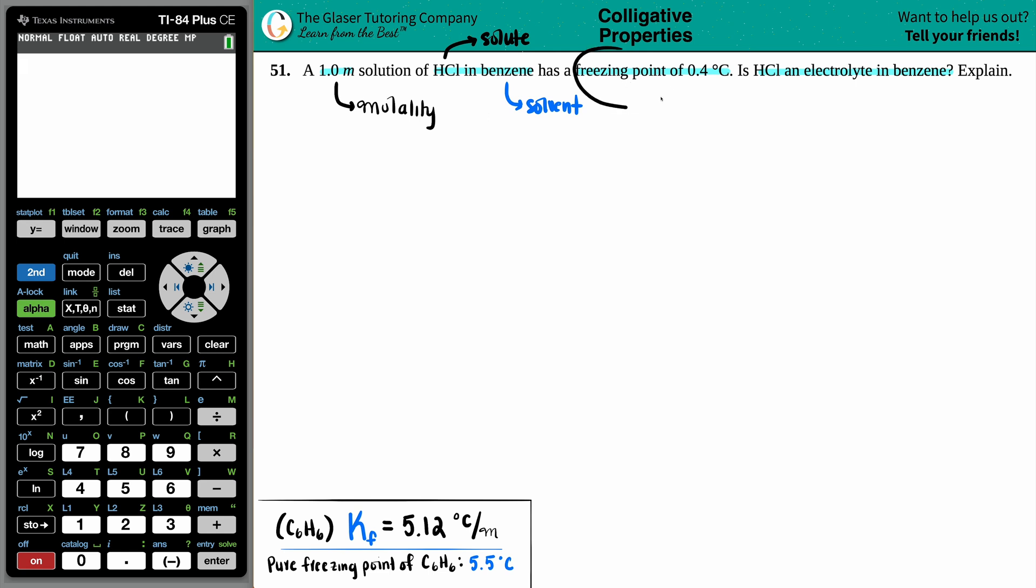They're talking about a freezing point of 0.4 degrees Celsius. What formula has molality and talks about freezing points? That's the freezing point depression formula, delta TF. That little triangle means delta, the change. So you have a change in freezing point, which is just a temperature, and this equals your freezing point depression constant.